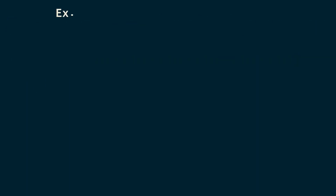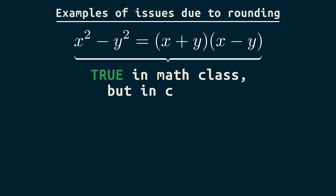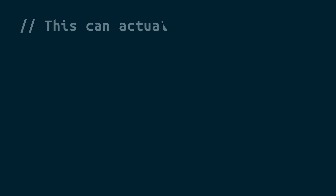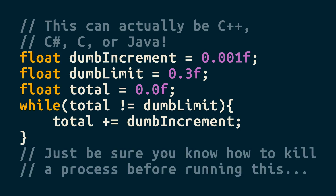This rounding means that things we take for granted in normal math may not be true anymore, as shown in this Python. And if you assume two floats will be equal, like in a loop or an if statement, you could be in for serious trouble.